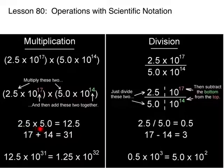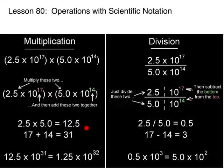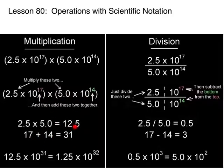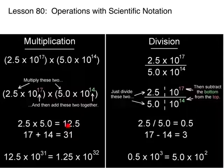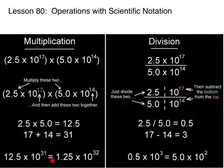So 2.5 times 5 is 12.5, and then 17 plus 14 is 31. Now we know that 12.5 is not in scientific notation, so we're going to have to move this decimal one place to the left. So instead of 12.5 times 10 to the 31st, we're going to make it 1.25 times 10 to the 32nd.